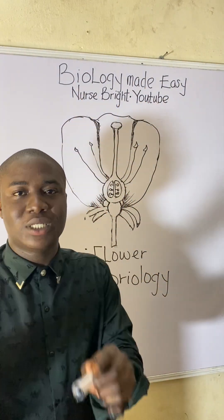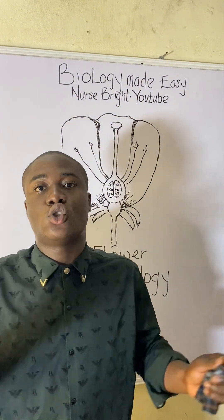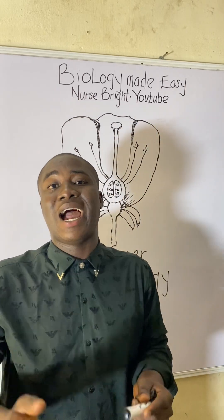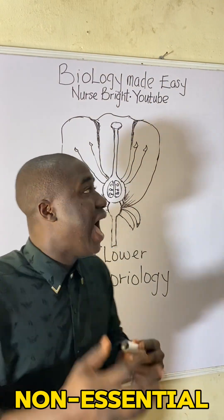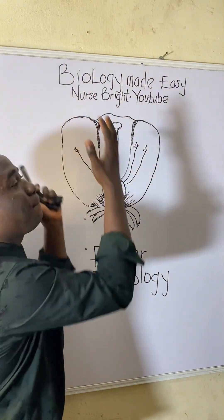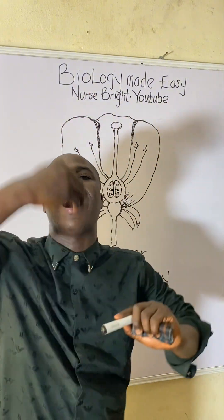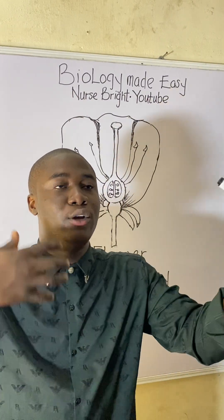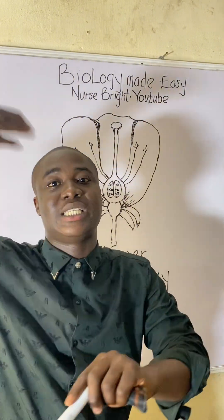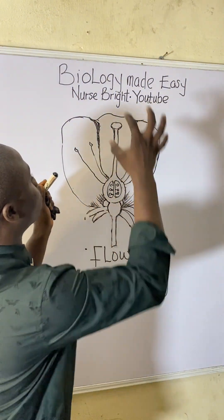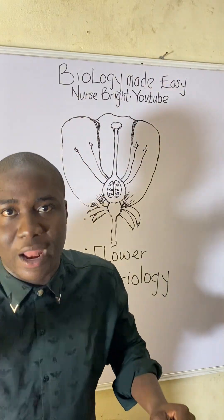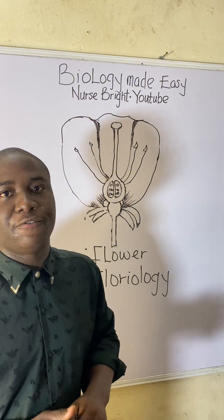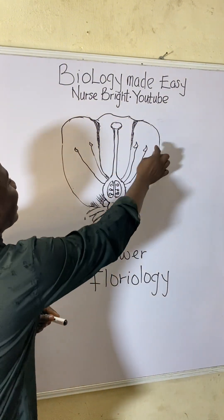A flower is divided into different parts. We have the essential parts of a flower and also the non-essential parts of a flower. As we progress, I will group them into essential and non-essential parts. It's important for you to be able to locate where they are found in this diagrammatic representation of a flower.